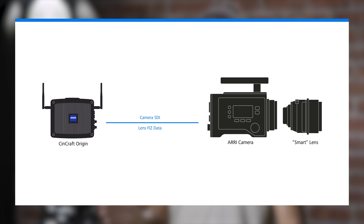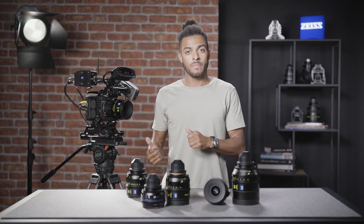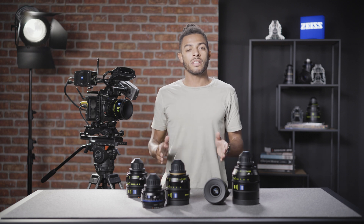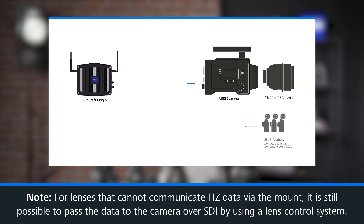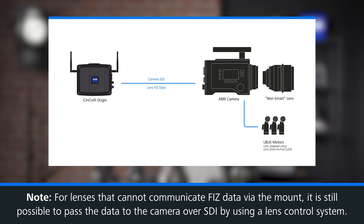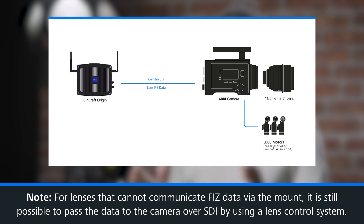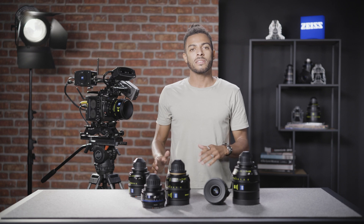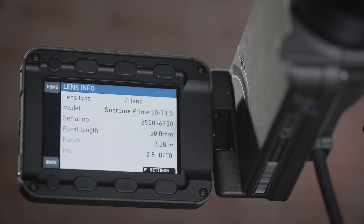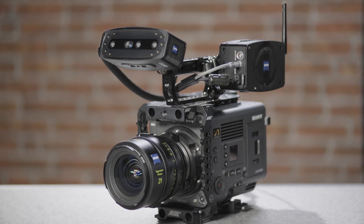However, not all lenses are able to communicate directly with the camera via the mount. For these lenses, it is still possible to use the SDI lens data, but it must be injected into the camera body via the lens control system. Let's take a look at some specific combinations of cameras and lenses to highlight what actually works. Here we have an Alexa Mini with a ZEISS Supreme lens. With the lens mounted, we can see here in the camera menu that it has been detected, because it's able to communicate via the lens mount.